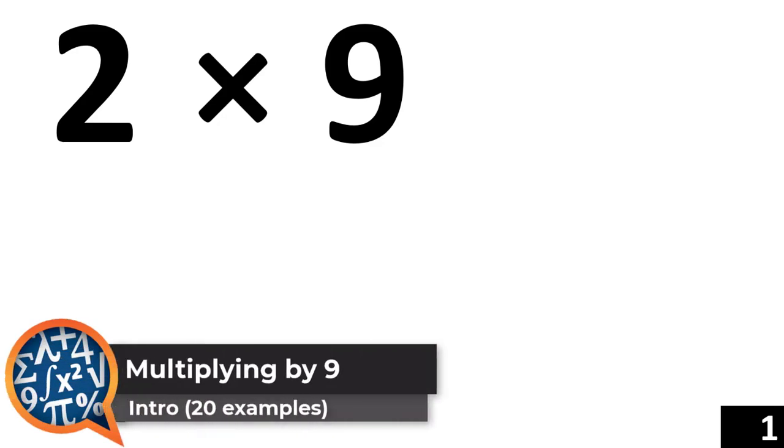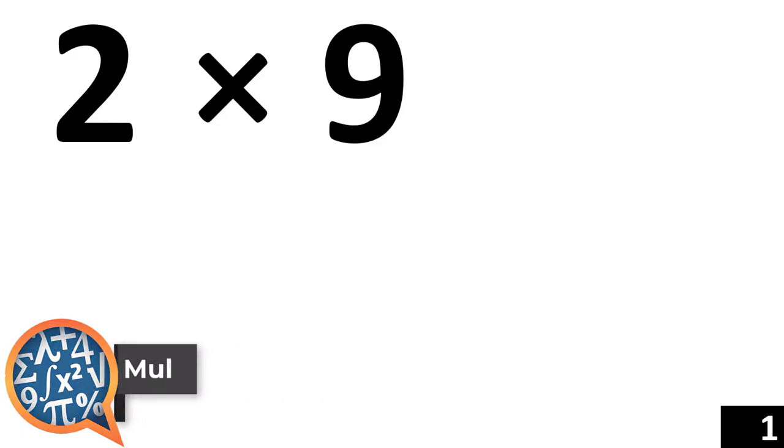In this video, we are going to take a look at the fifth multiplication rule, and that's multiplying anything times the number 9.